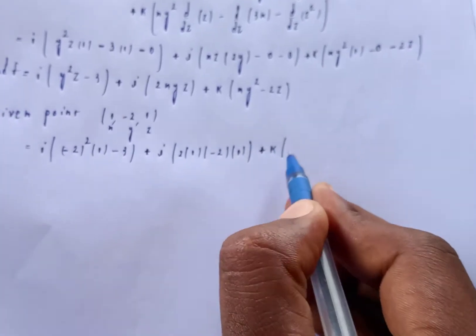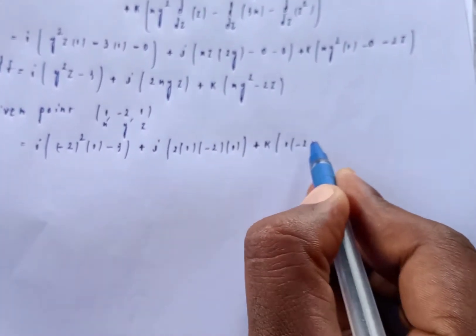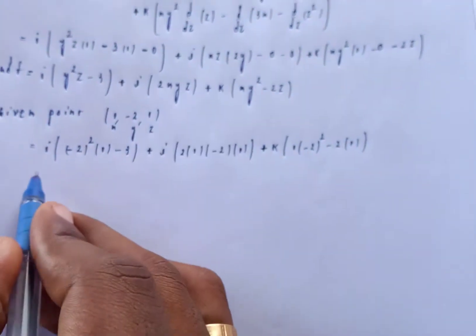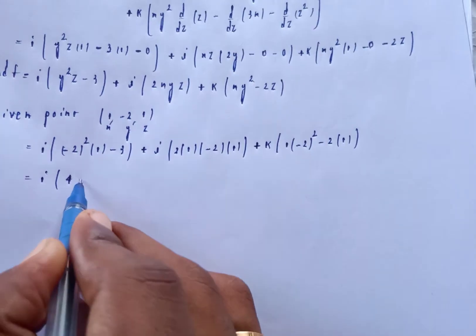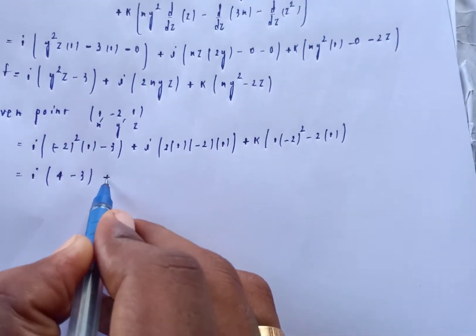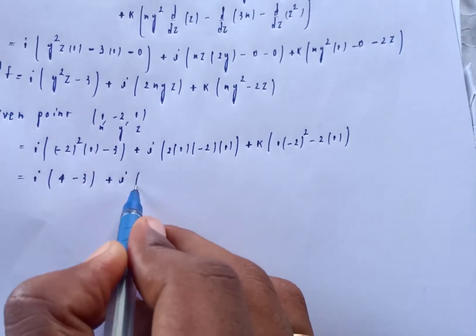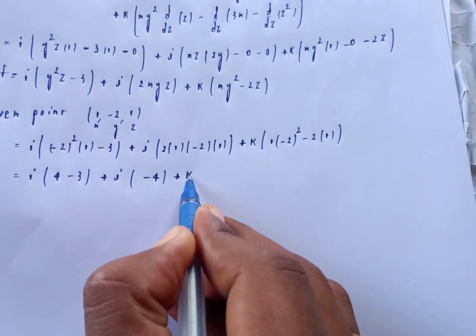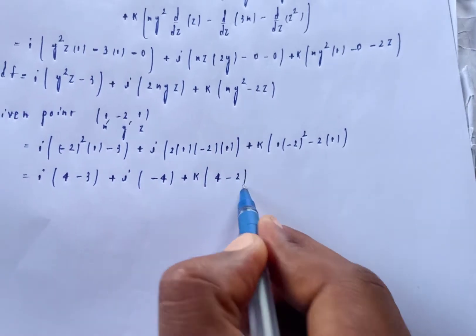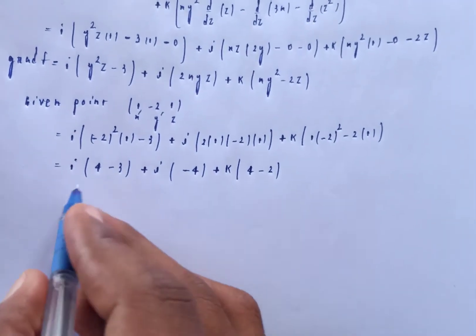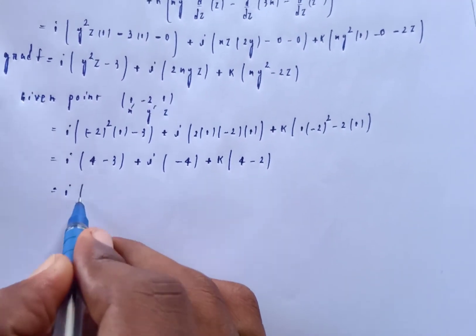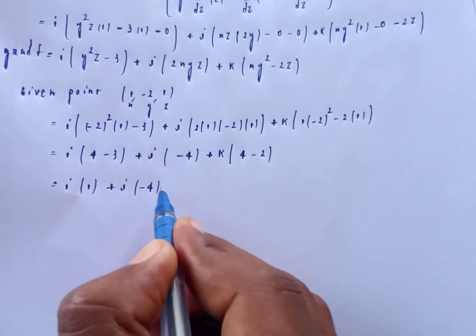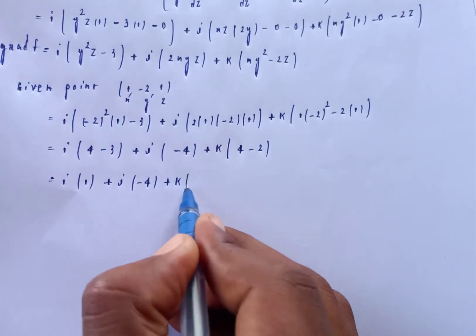Substituting x=1, y=-2, z=1: i of [(-2)²·(1) - 3] + j of [2·(1)·(-2)·(1)] + k of [(1)·(-2)² - 2·(1)]. That gives i·[4 - 3] + j·[-4] + k·[4 - 2].